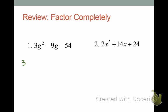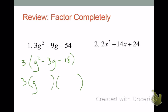So this is going to be a 3. Factor out a 3 and you're left with g² minus 3g minus 18. Now we make our two sets of parentheses, factor the first term into g and g, and we're looking for factors of negative 18 that add to negative 3. Negative 18 could give negative 18 and 1, 18 and negative 1, negative 9 and 2, 9 and negative 2, negative 6 and 3, or 6 and negative 3.